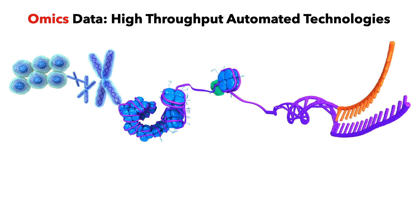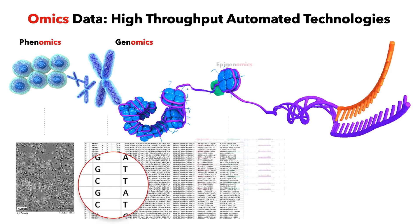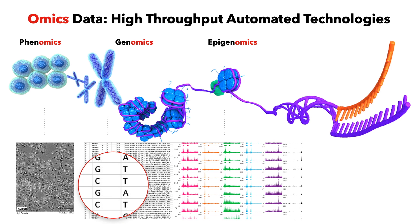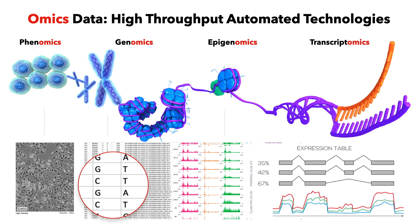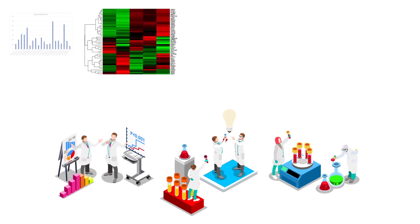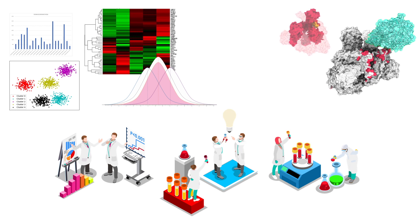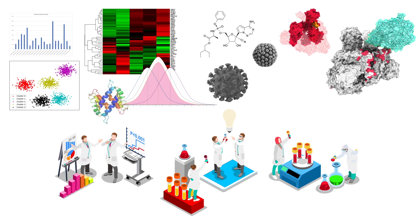Omics technologies like next-generation sequencing can be used to explore the roles, relationships, and actions of the various types of molecules that make up the cell of an organism. Many types of omics data can be generated using next-generation sequencing, or what is also known as high-throughput sequencing. To analyze such data, novel computational technologies have been developed that are transforming life sciences, enabling biotechnology, and empowering biomedical research.